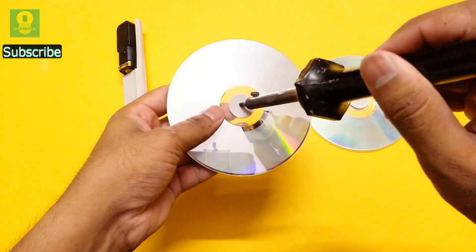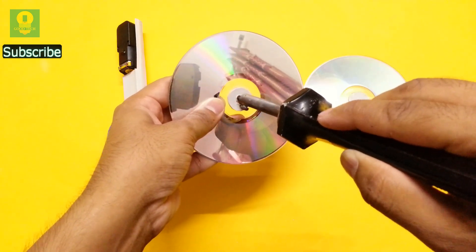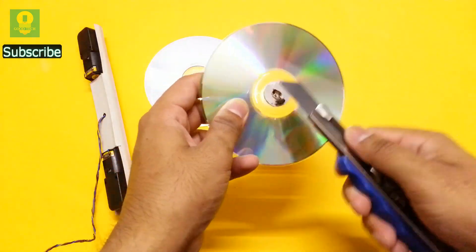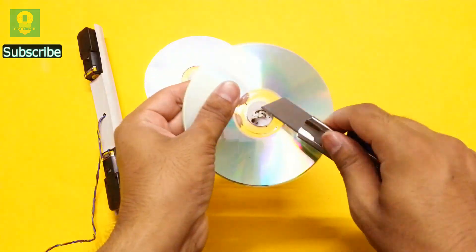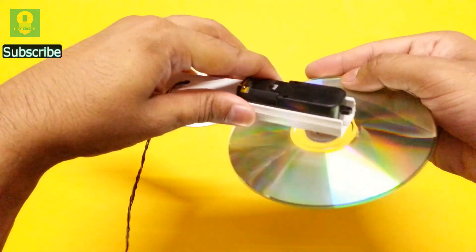Now carefully make a slit in the center of the CDs to fit the motor. Clear the black residue using a knife. Apply some hot glue and fix the CD to the motor shaft.